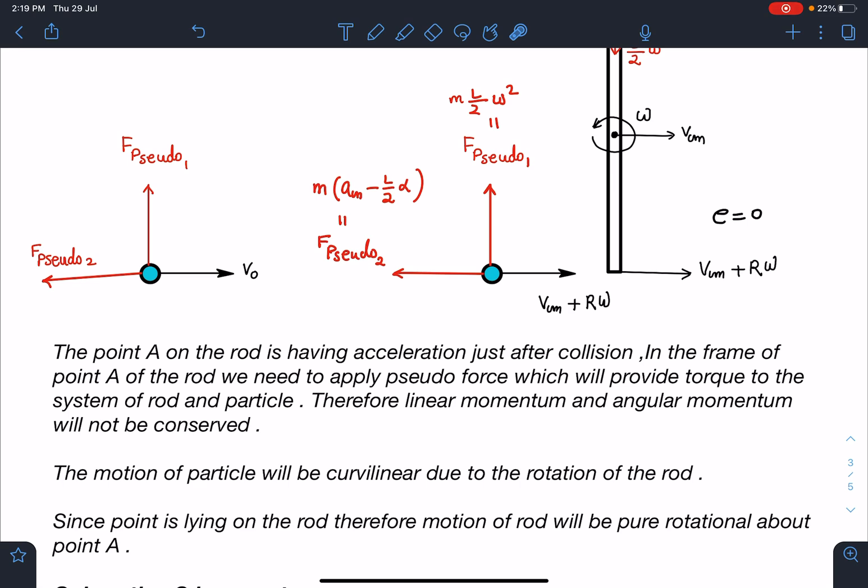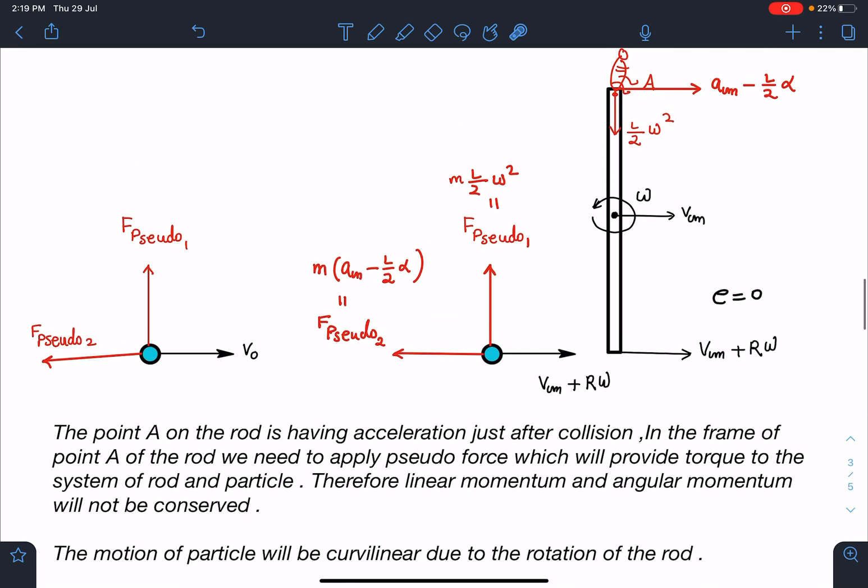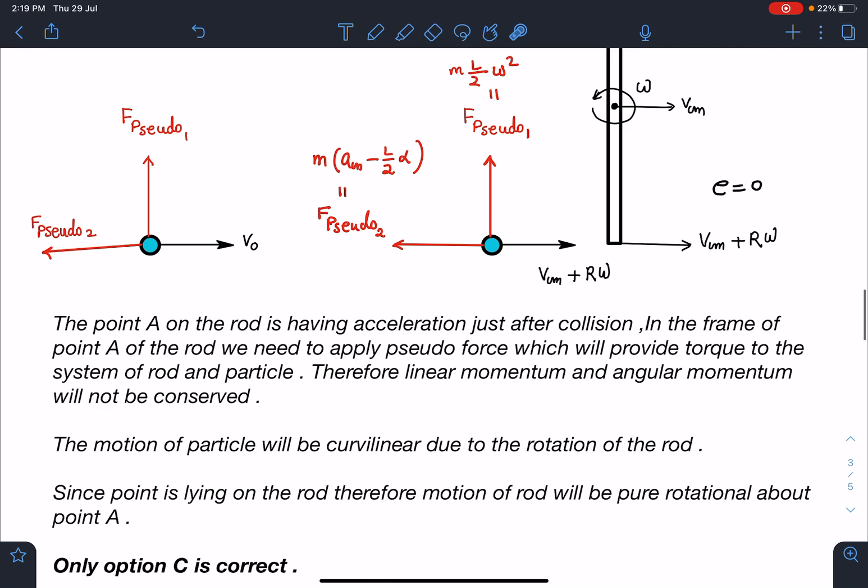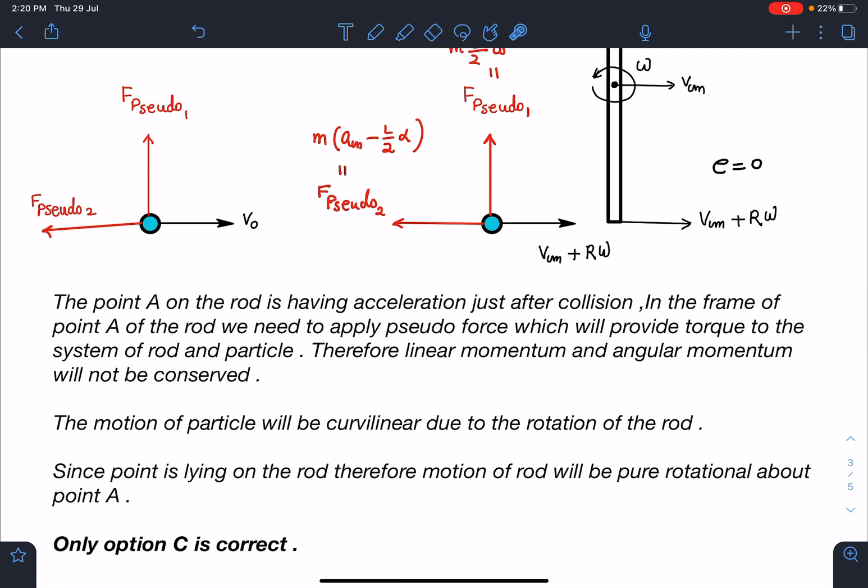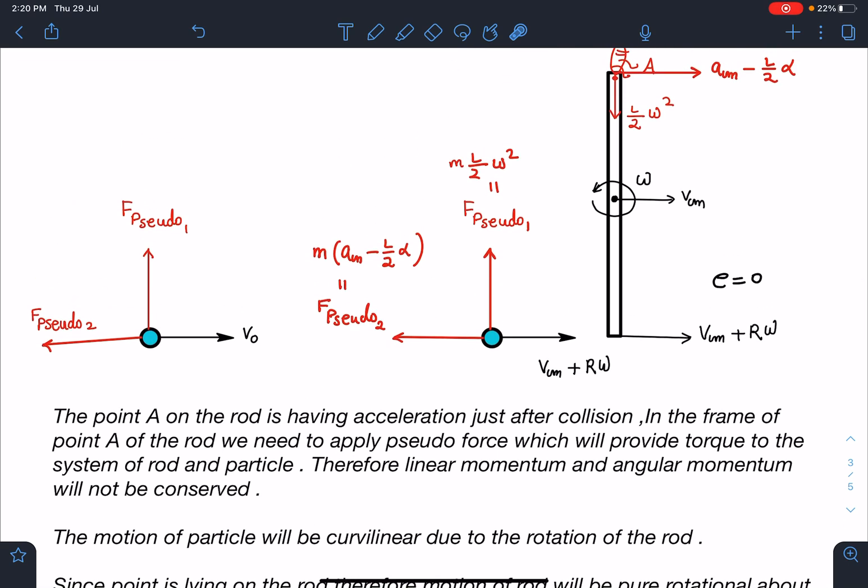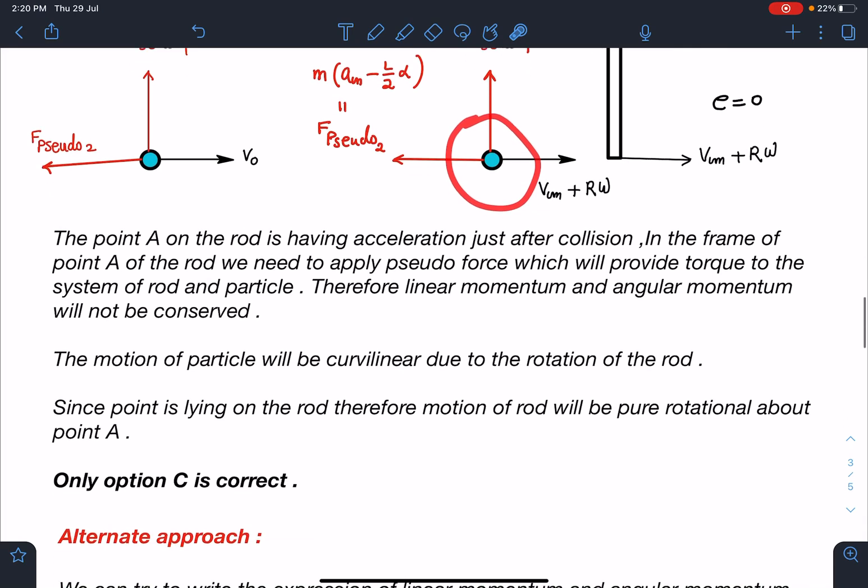Another part is the motion of particle will be curvilinear due to the rotation of the rod. We know when any rigid body is in combined motion and if we are observing it with respect to some point on the rigid body, with respect to any point on the rigid body the motion of it will be pure rotation. Here we can say the motion of rod will be pure rotation about point A. The motion of particle will be curvilinear due to the rotation of rod. With respect to ground, definitely we will see the particle moving in a straight line, but in the frame of A we will be finding a curvilinear motion for this particle. Therefore that option also will not come. Only option C is correct.